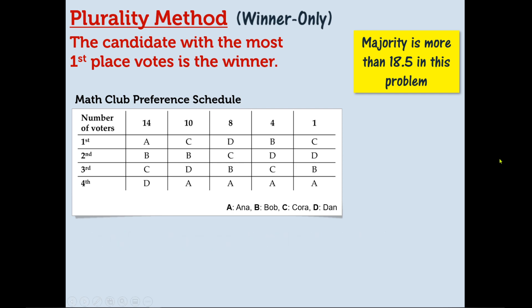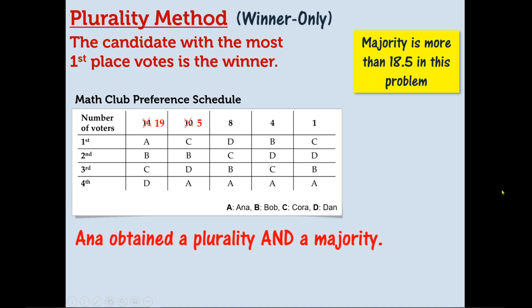But let's say that instead of having 14 ballots in this pile and 10 ballots in this pile, there were 19 in this pile and five in this pile. In that situation, Anna would have obtained both a plurality and a majority. Plurality means she obtained the most first place votes, which she did — she received 19. And a majority would be if she obtained more than 18.5, which is half of the 37.